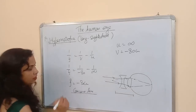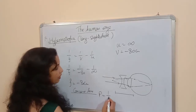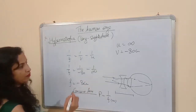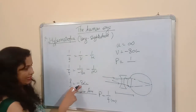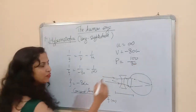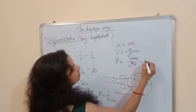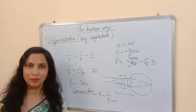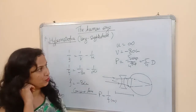Now what is the power of this lens? Power equals 1 divided by focal length, but the important condition is that focal length must be in meters. So power = 1/(−80 cm) = 1/(−0.80 m). Calculating this gives approximately minus 1.25 diopters. So the power of the lens required to correct this myopic vision is minus 1.25 diopters — the negative sign confirming it is a concave lens.